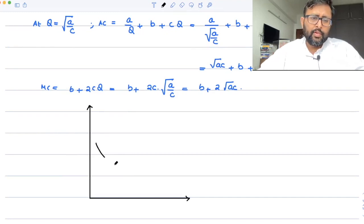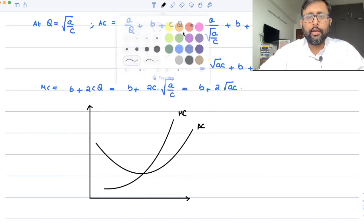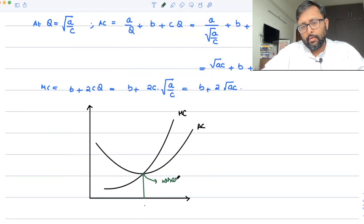So you will notice that this is what my AC curve is, and MC is going to cut AC at its minimum below, right? At this particular point. So this is where AC = MC.